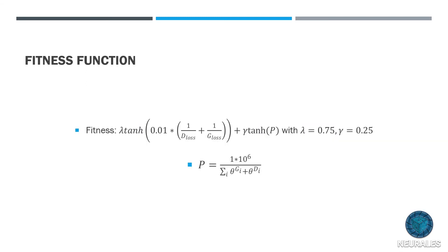The most important part of a genetic algorithm is the fitness function. This fitness function is normalized between zero and one using lambda, gamma, and a hyperbolic tangent. The first term incorporates the generator and discriminator loss - as the loss shrinks, fitness goes up. The point parameter is a scaling parameter so that the loss is roughly one one-hundredth or less, as it's not realistic to get lower than that too often. The gamma term with the hyperbolic tangent controls model size - the number of parameters - where the size score is one million divided by the sum of weights in the generator and discriminator. This is a very much engineered fitness function, a good starting point that we'll likely tweak in future experiments.